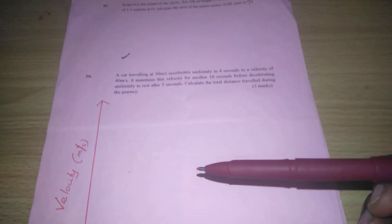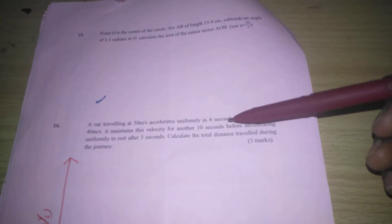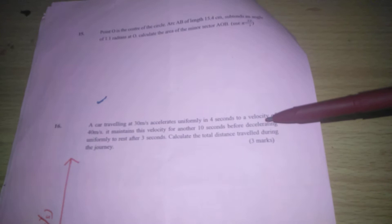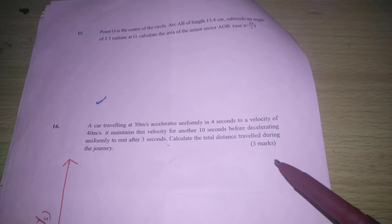A car traveling at 30 meters per second accelerates uniformly in 4 seconds to a velocity of 40 meters per second. It maintains this velocity for another 10 seconds before decelerating uniformly to rest in 3 seconds. Calculate the total distance traveled during this journey.